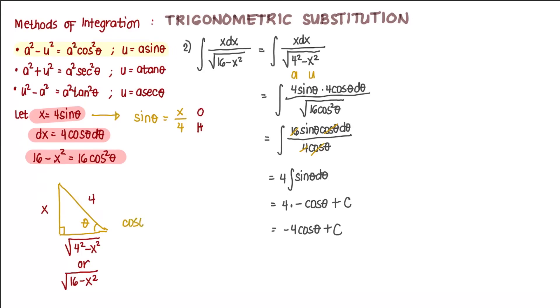cosine theta is equal to, recall cosine theta is adjacent over hypotenuse. The adjacent side is square root of 16 minus x squared over hypotenuse is 4.